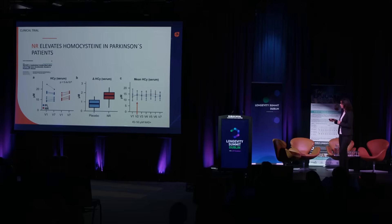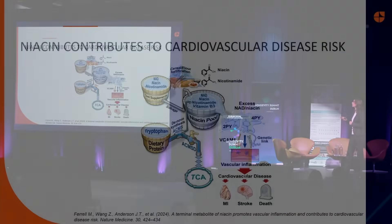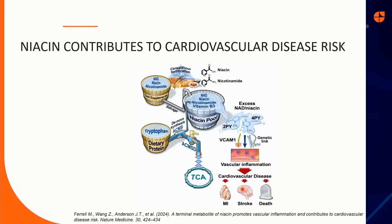Similarly to our study, the increase in homocysteine occurs when NAD+ in blood is reaching close to 50 micromolars. There is also another very recent study showing that excess NAD boosters — and the excess NAD breakdown products 2PY and 4PY — actually have a vascular inflammation effect and contribute to the risk of cardiovascular disease.